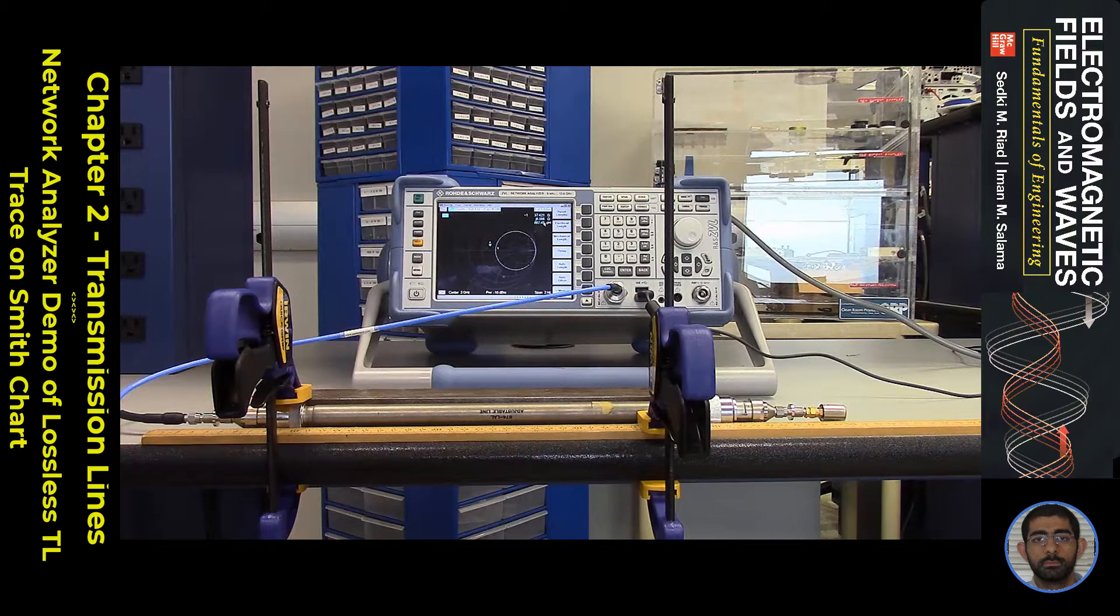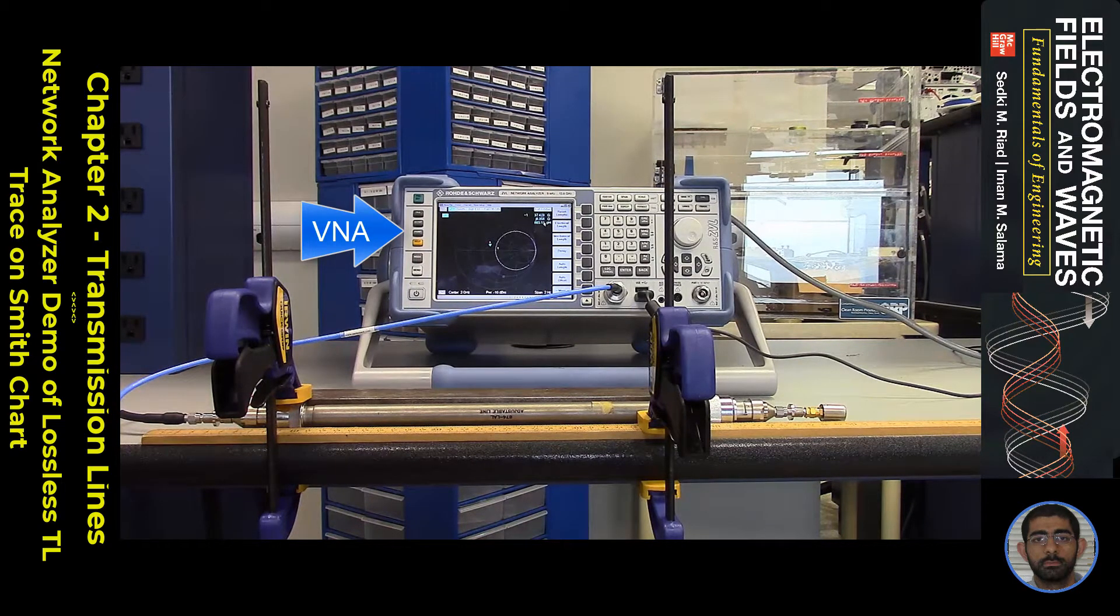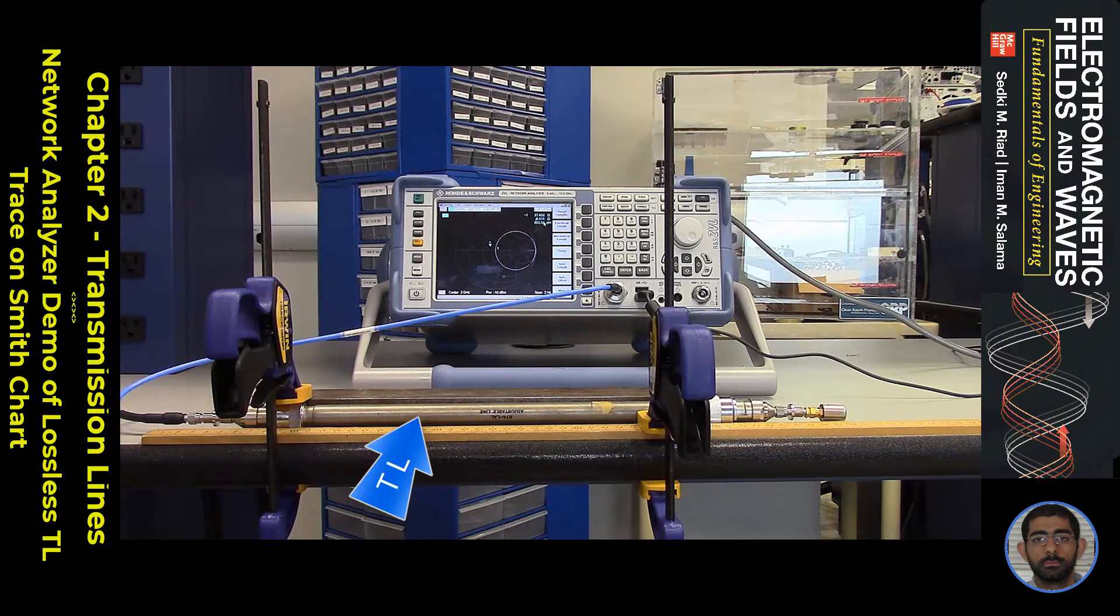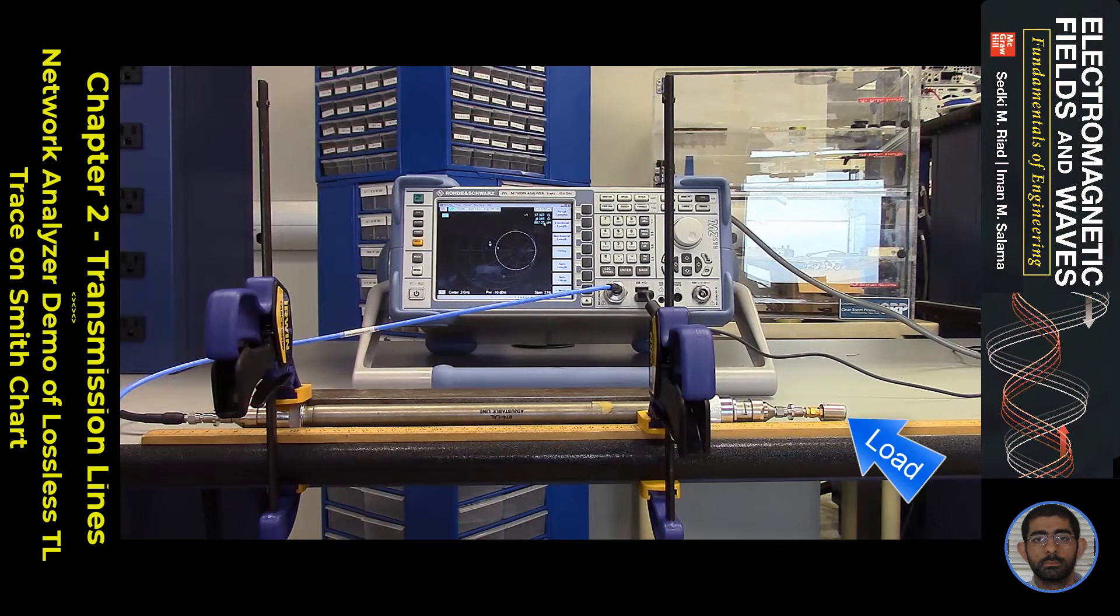Our setup consists of three components. First, we have a vector network analyzer, which serves as the signal source and the Smith chart display. Next, we have an adjustable coaxial transmission line with an air core. And finally, we have a resistive load impedance, which is connected to the other end of the transmission line.